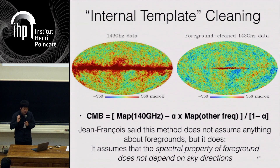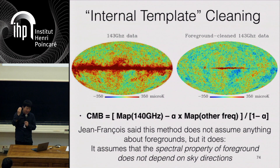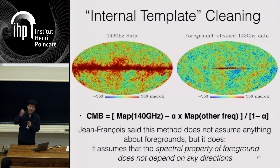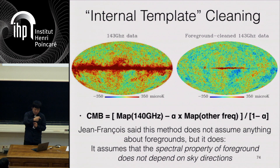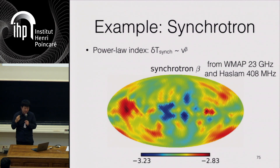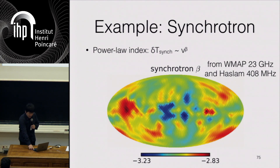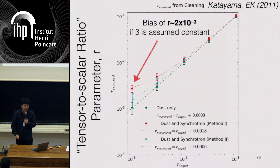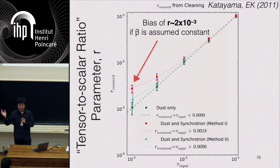Jean-François said this method doesn't assume anything about foregrounds, but it actually does — unless the spectral property of the foreground is uniform over the sky, this method just doesn't work. If you assume that the synchrotron spectral index is uniform over the sky, then this method works. But in reality, the synchrotron spectral index varies over the sky. If you assume it's constant, you obviously get biased results. When we apply this internal template method to futuristic datasets from, say, LiteBIRD satellite, it's a simple thing: take 100 GHz or whatever, subtract 40 GHz multiplied by a coefficient. You get a bias, sure, but it's only at the level of 2 times 10^{-3}.